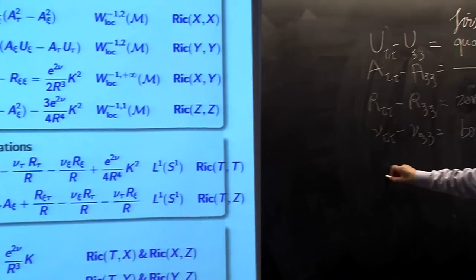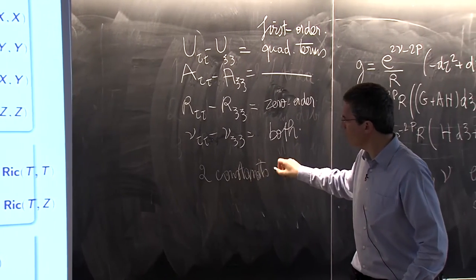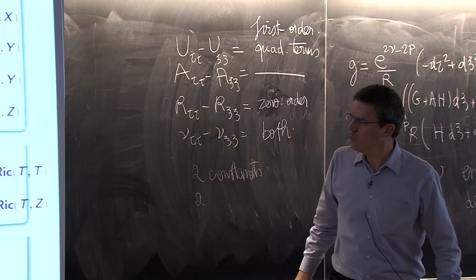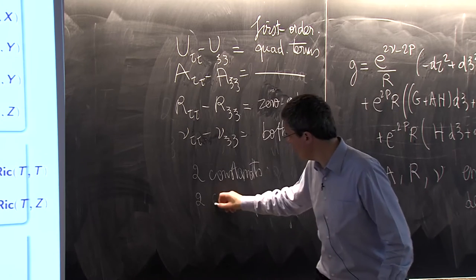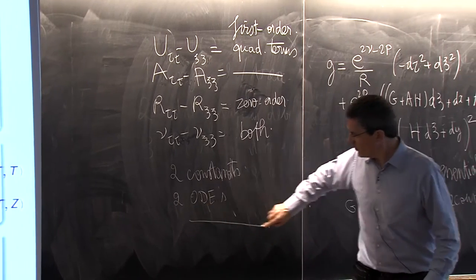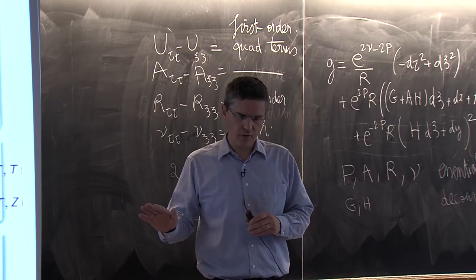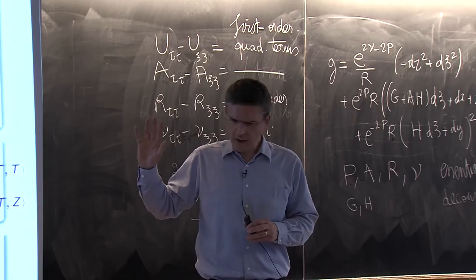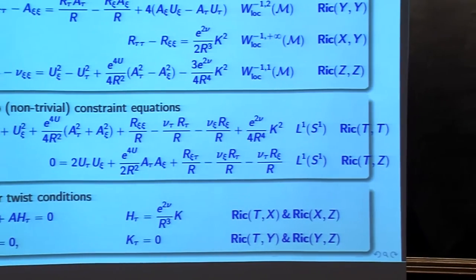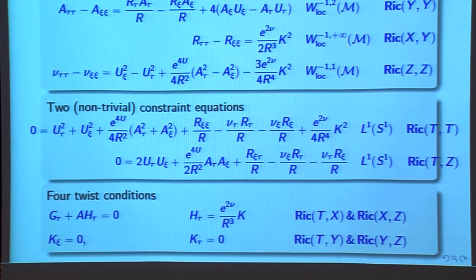We have four wave equations, two constraints, and two more equations (thinking of K as a constant) which can be viewed as ODEs. What we want to do is solve that — get the local existence results in the right spaces, then extend the solution in areal coordinates. We arrange the initial hypersurface to coincide in both coordinate systems and observe that R is strictly increasing in τ since ∇R is time-like.